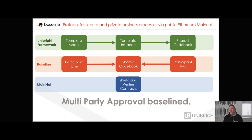The Ethereum mainnet is basically used as a notary service to record the different states that the workflow is in — for example, with every added approval. The mainnet is used to put hashes on it in a shielded way, so that other parties who can only observe the mainnet are not able to tell who the parties are that added hashes, and especially not what those hashes stand for. There is no option for a third party to infer from timestamps or content what business process is being used or who the participants are.